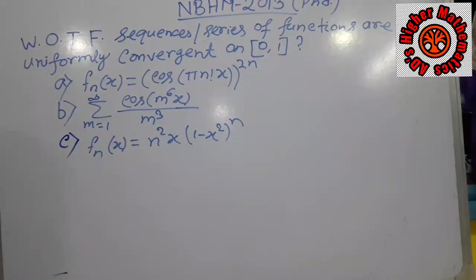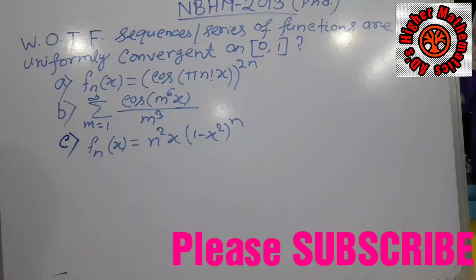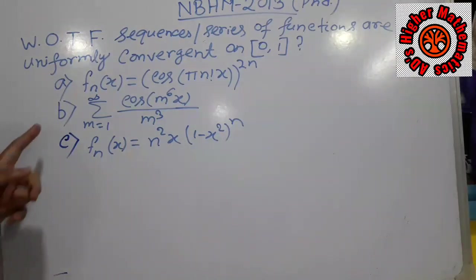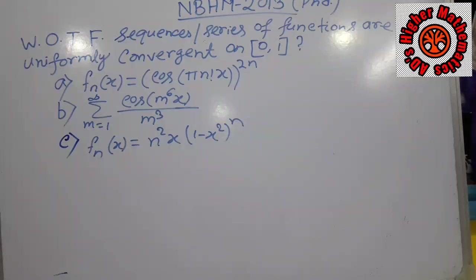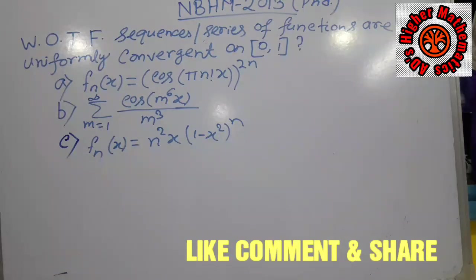Welcome to Edithiara Mathematics. In the 2013 PhD exam, the question asks: which of the following sequences or series of functions are uniformly convergent on the closed interval [0,1]? I choose this question for the first option because the other two options are very common and you can easily solve them. Option A is very interesting and logical, so I will solve options B and C first, then solve option A.